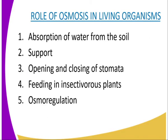So now we are going to look at the roles of osmosis in living organisms. If you are able to define osmosis, you must also be able to give its roles to living organisms. Remember that these living organisms include both plants and animals. One of the roles of osmosis is that it is used in absorption of water from the soil. Root hair cells of plants absorb water from the soil by osmosis. Osmosis also facilitates water distribution from cell to cell in the body.